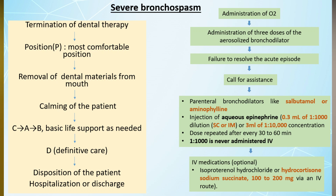For management of severe bronchospasm, most steps remain the same with a key difference in definitive care: after oxygen administration, at least three doses of aerosolized bronchodilator (salbutamol) must be administered. If it fails to resolve the episode, call for assistance and begin parenteral administration of bronchodilators — salbutamol (0.5 mg subcutaneously or IM, or 0.25 mg IV very slowly) and aminophylline.